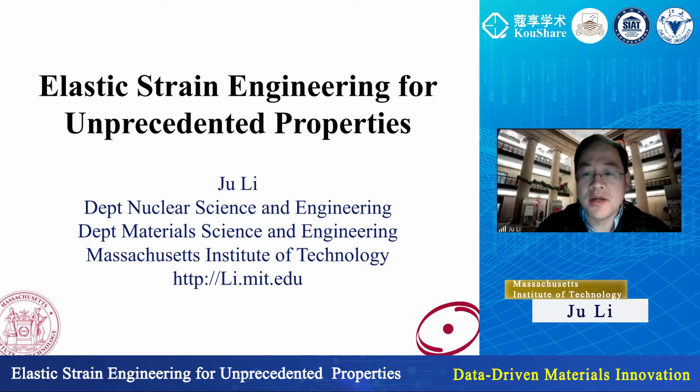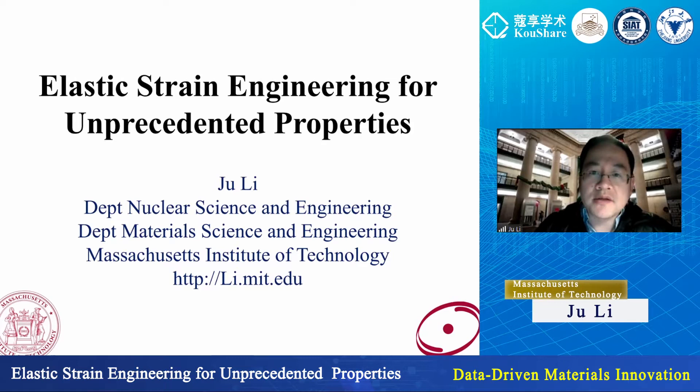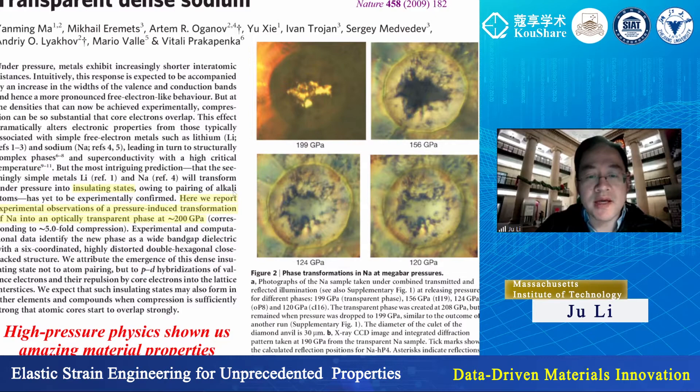Data science and first principles calculations combined with experiments can engineer the elastic strain of materials to achieve new physical and chemical properties. We've all known that high-pressure physics can give us amazing properties. For example, if I take a piece of metallic sodium and put it in a diamond anvil cell at 200 gigapascal, it actually turns optically transparent.